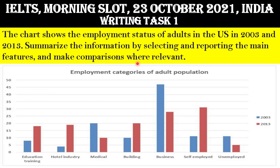So now guys, today's Writing Task 1 question is: the chart shows the employment status of adults in the United States in 2003 and 2013. Summarize the information by selecting and reporting the main features and make comparisons where relevant. Here is the bar graph — employment categories of adult population.